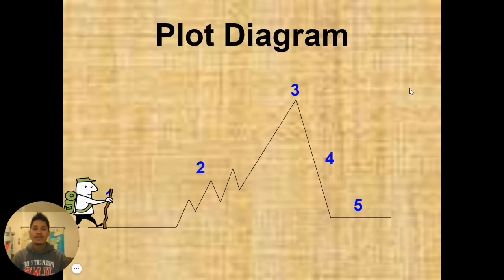So there are five parts of the plot diagram: one, two, three, four, five, and it kind of looks like a mountain as you can see, going up and then eventually coming back down.